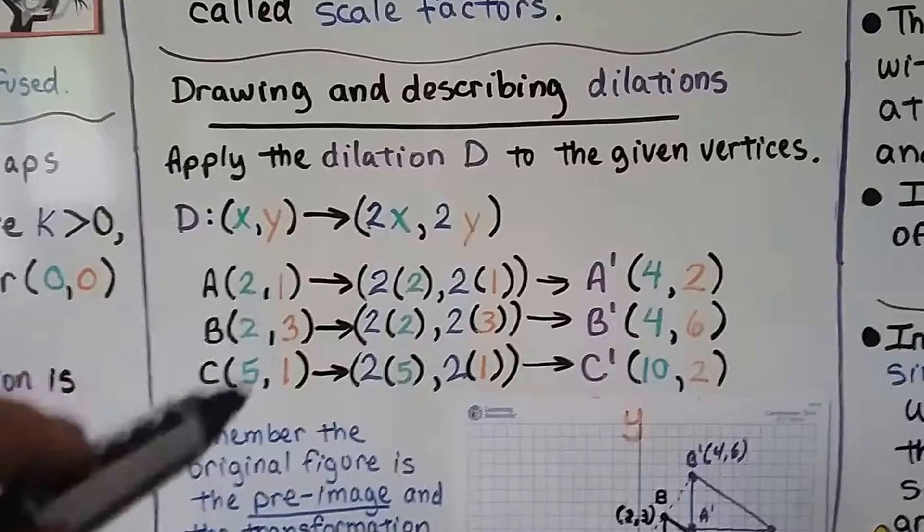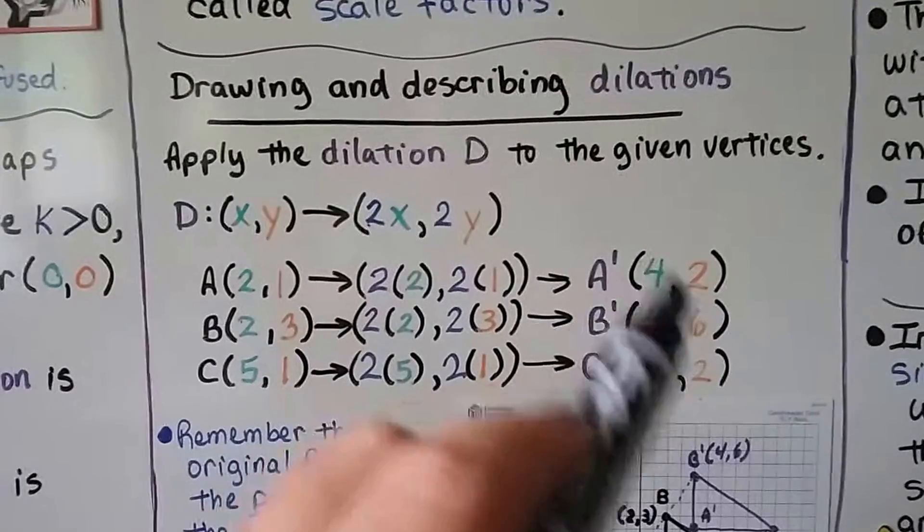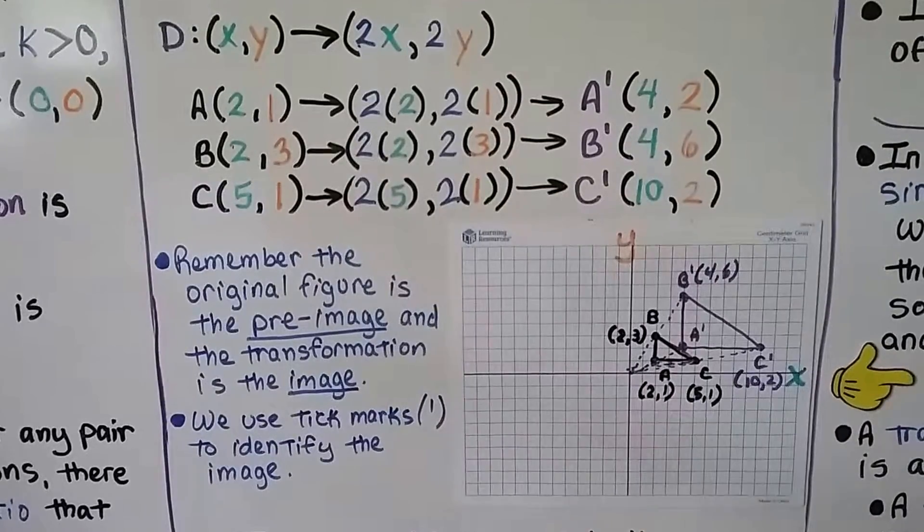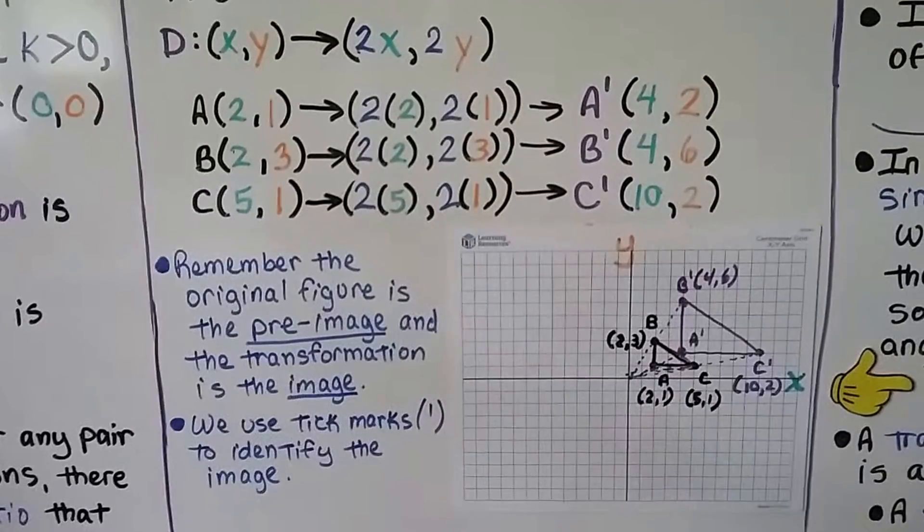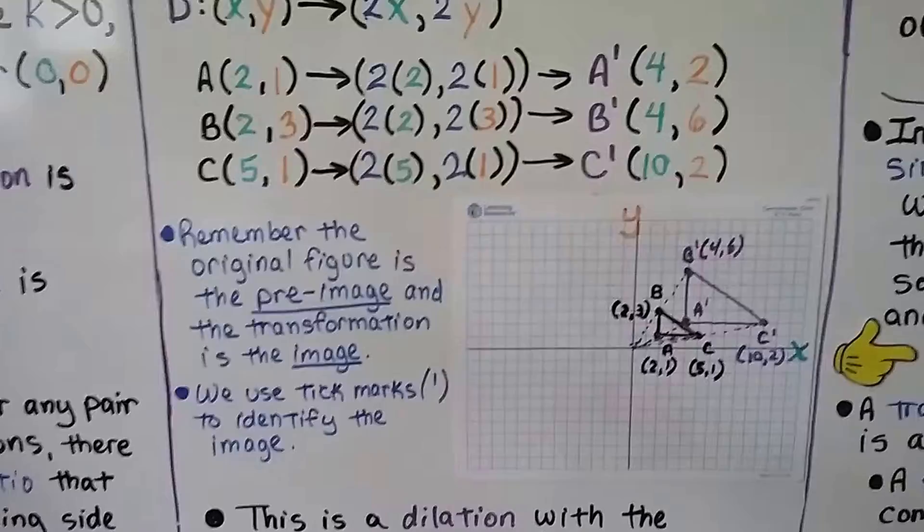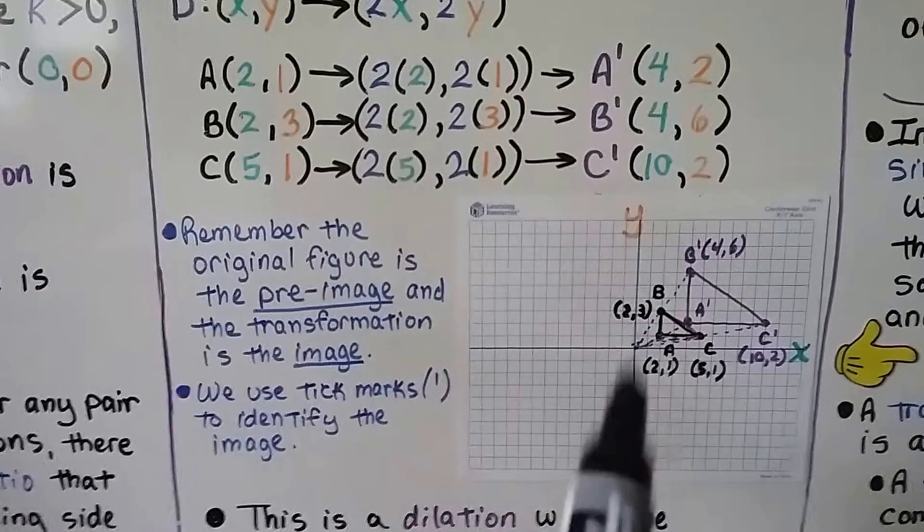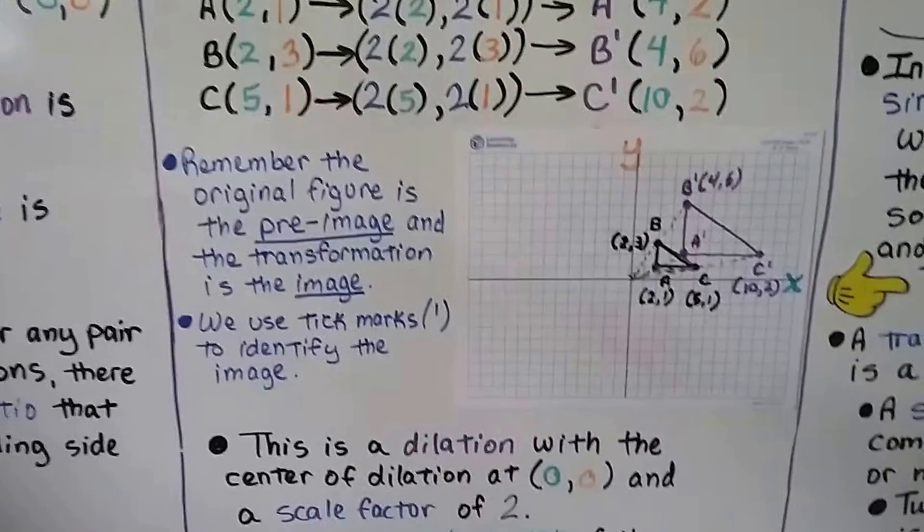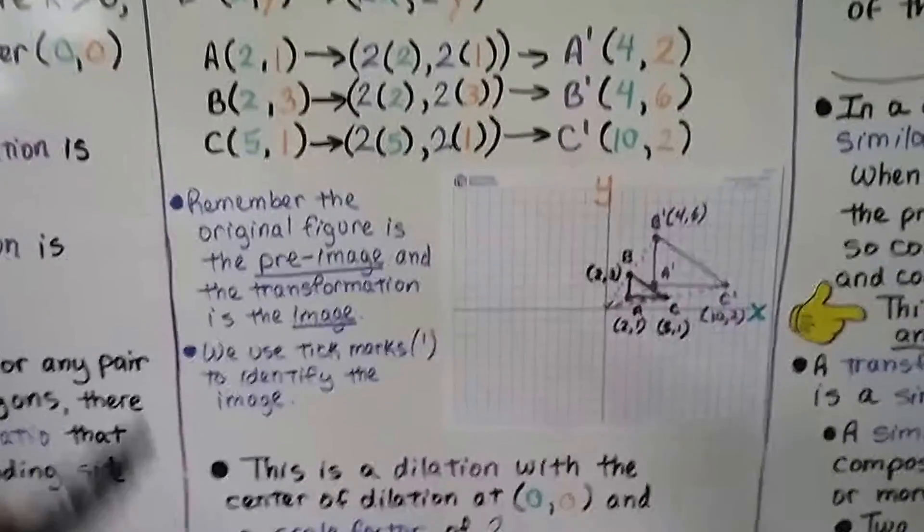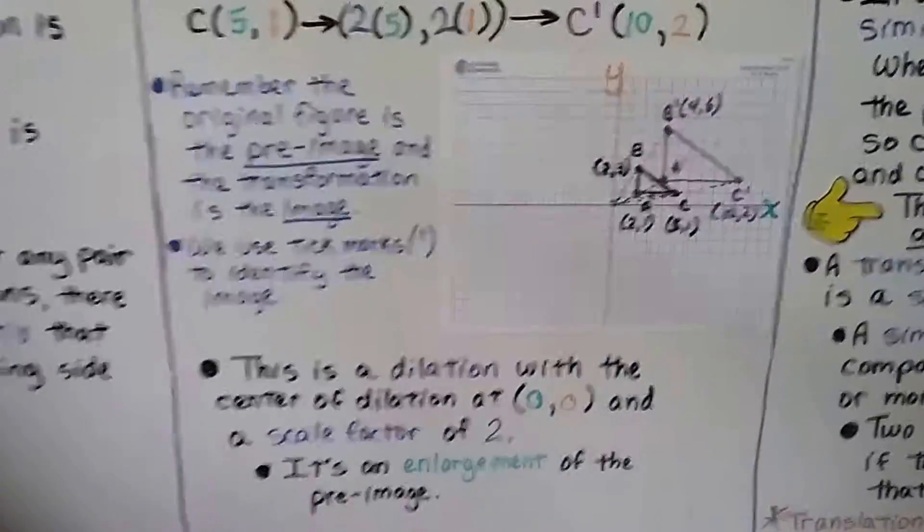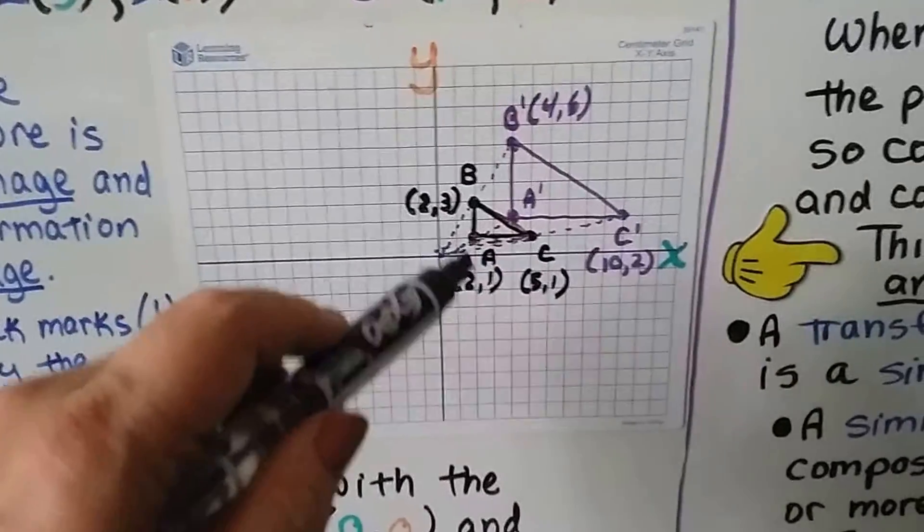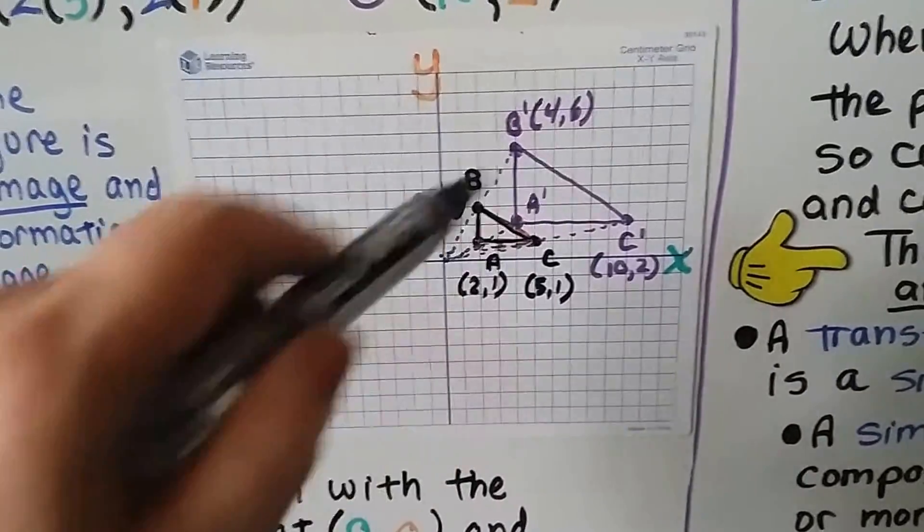And we can graph these points and we get this black triangle with A prime, B prime, C prime as this purple one. So remember the original figure is the preimage and the transformation is the image, that's the copy. And we use tick marks to identify the copy, the image. So this is a dilation with a center of dilation at (0,0), the origin, and a scale factor of 2. It's an enlargement of the preimage. So the preimage, the black one, enlarged times 2 and became A prime, B prime, C prime.